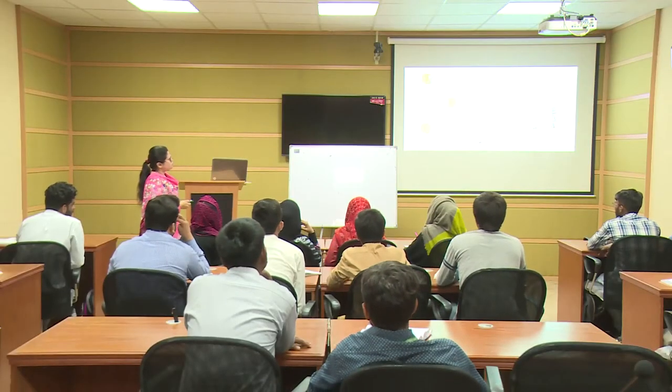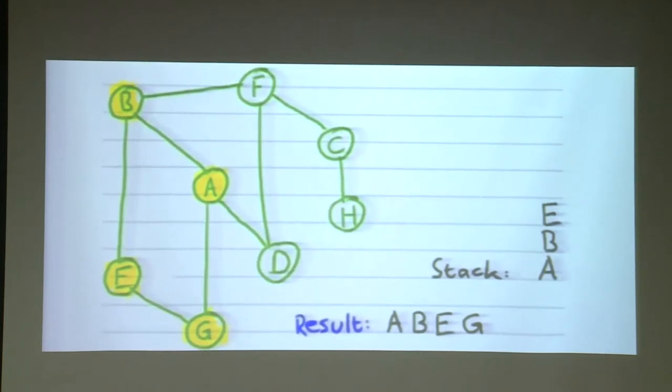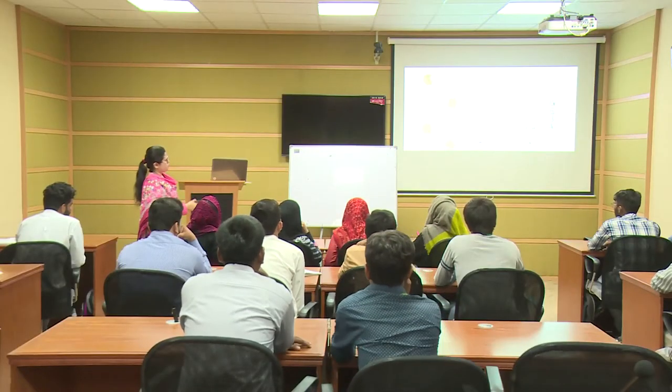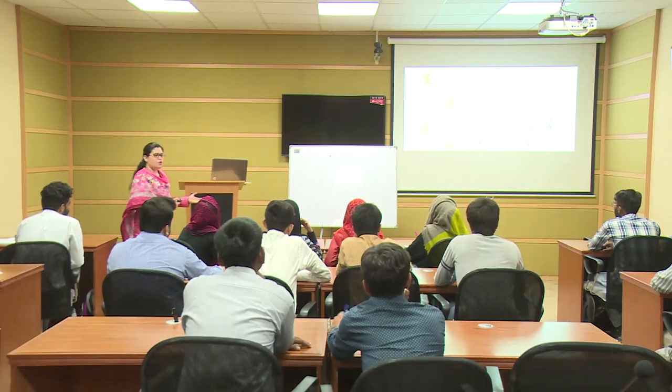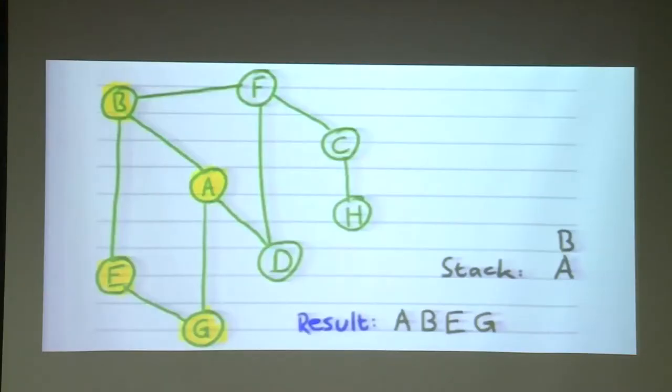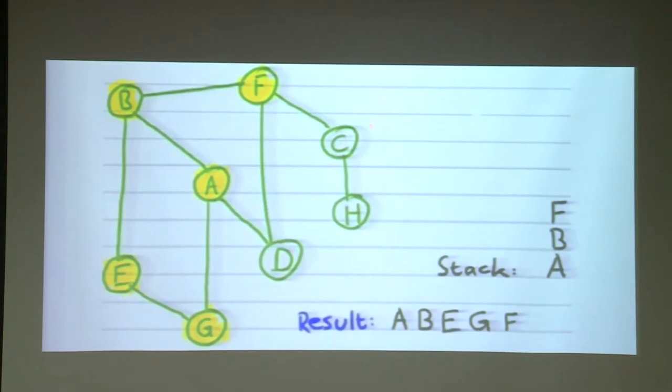The last value on the stack is E. Adjacent nodes of E: only G is left since B has been visited. Mark G, visit G, and push it on the stack. Adjacent nodes of G are A and E — both have been visited. So pop G from the stack. E's adjacent nodes are also visited, so pop E. F is still left for B, so visit and mark F, push it on the stack.